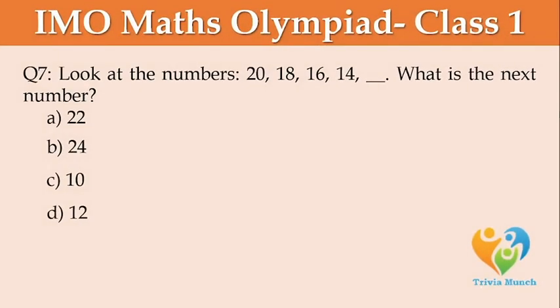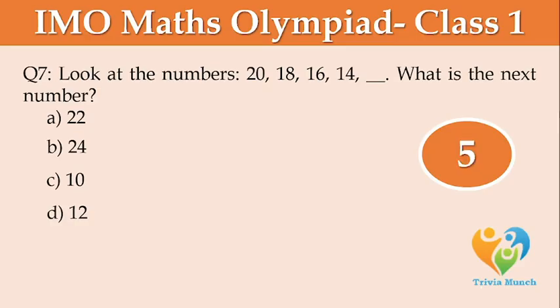Look at the numbers 20, 18, 16, 14. What is the next number? Option A: 22, Option B: 24, Option C: 10, Option D: 12.